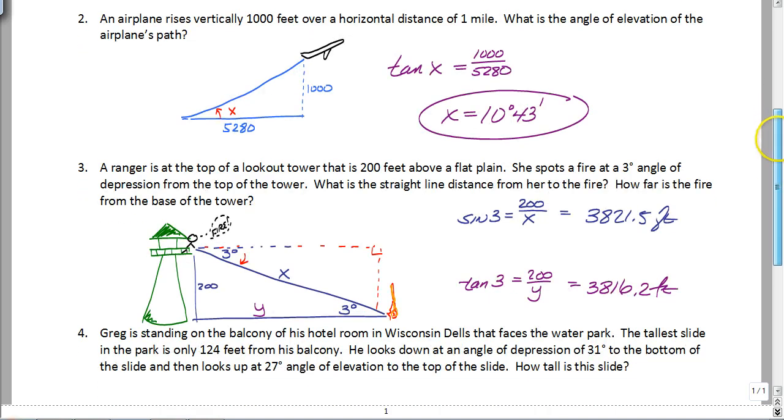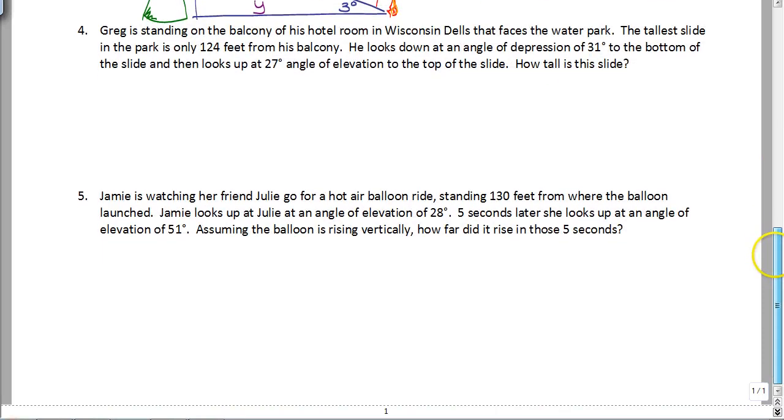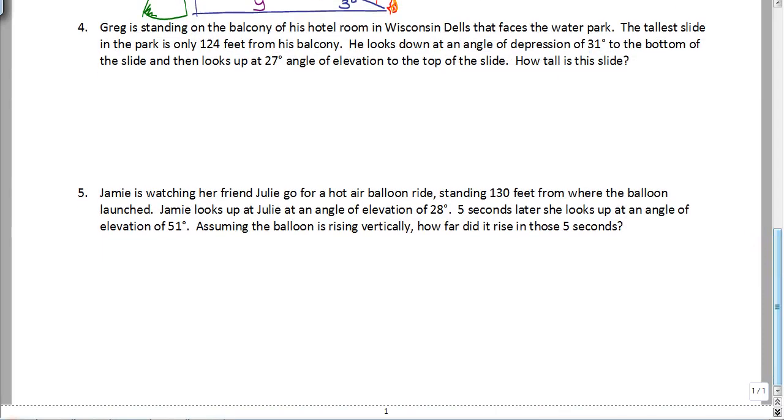So there's another two word problems here that are going to require multiple steps again. So number four, you're at a balcony of Wisconsin Dells. And you've got the tallest slide is only 124 feet from the balcony. He looks up and down to find the top and bottom of this slide. And basically, he wants to know how tall the slide is. So you're going to need to draw two triangles in that one.